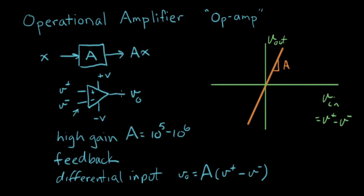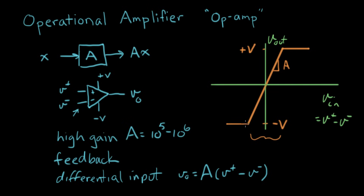One of the properties of this is that V out cannot go above or below its power supply voltages. On this plot, that's called saturation. If V out gets up to V plus, we say it saturates, and it goes flat at the top and bottom — where the lower flat value is minus the power supply and the upper flat value is the positive power supply. But over the range between those two points it's quite linear, goes through zero, and this is where we use it most of the time.